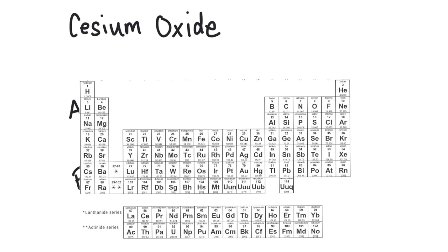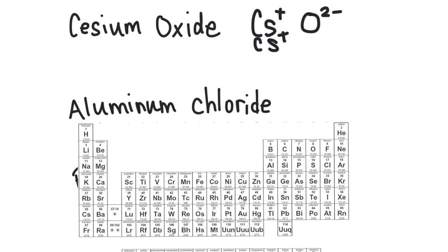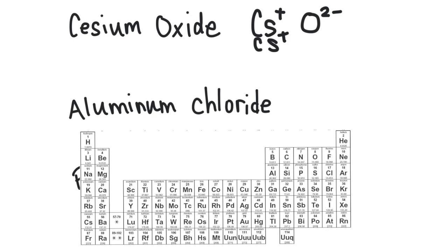Let's find cesium and oxygen. Cesium is in Group 1, so it has a +1 charge. Oxygen is in Group 6, so it has a −2 charge. These don't balance, so I bring in another cesium to give a total of +2, which balances the −2. So the formula for cesium oxide is Cs₂O — two cesiums and one oxygen.